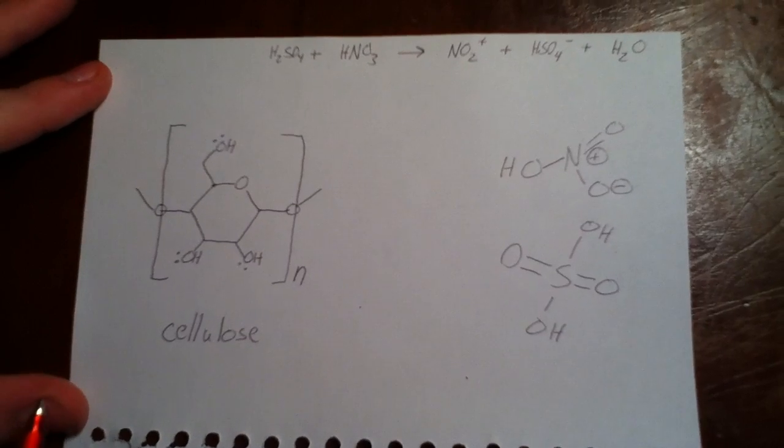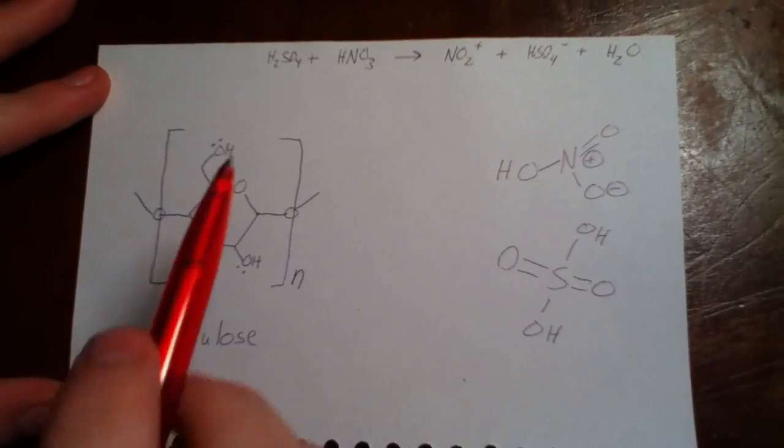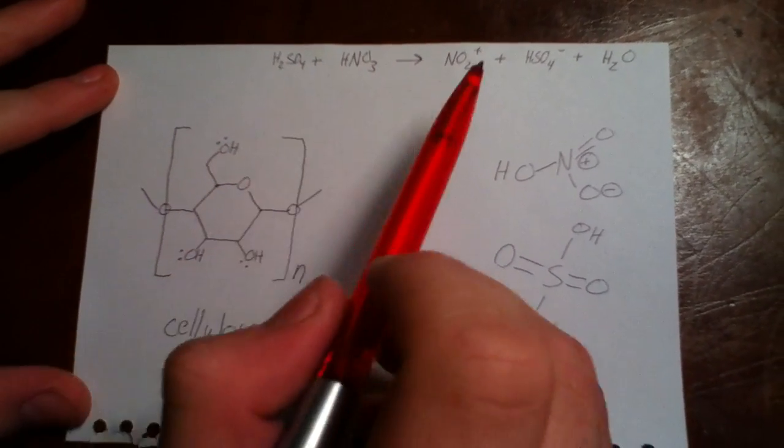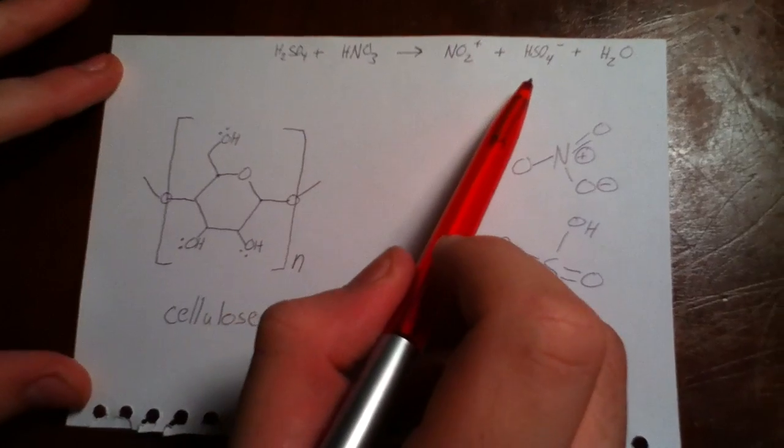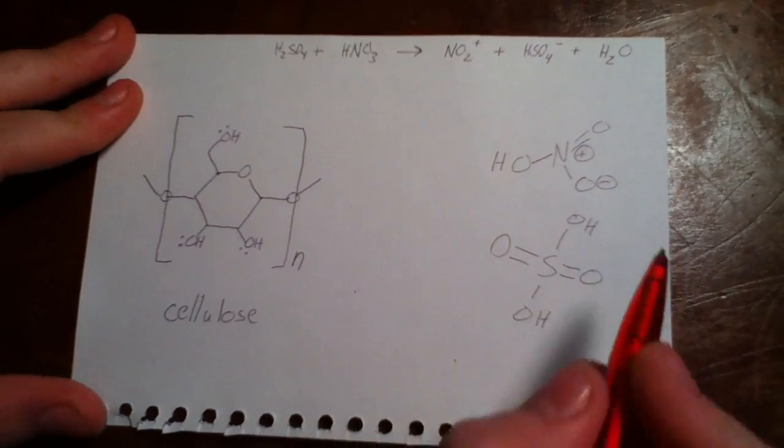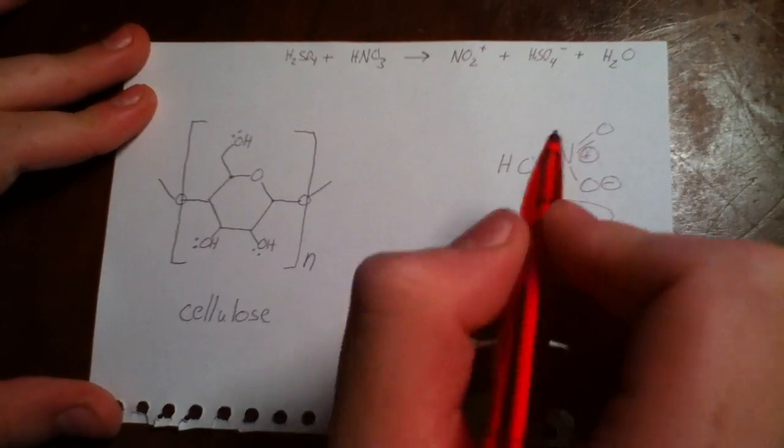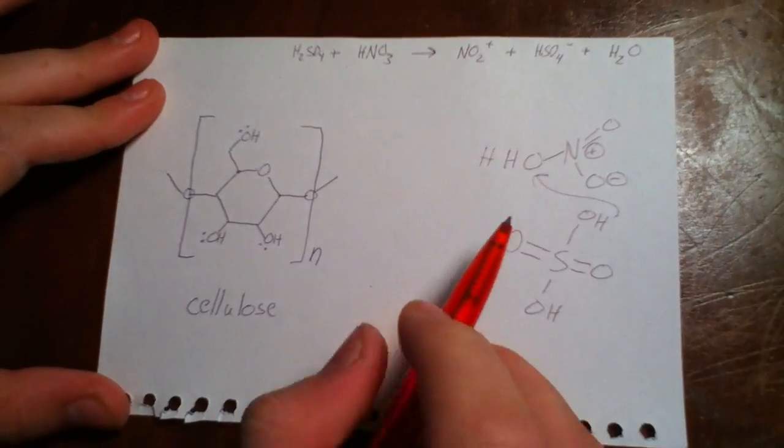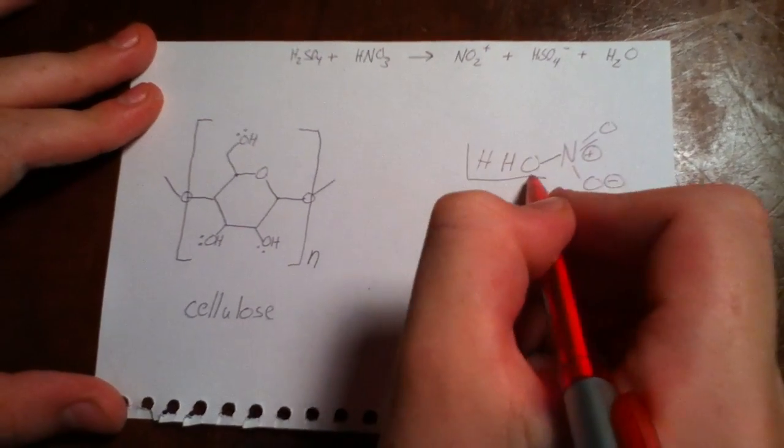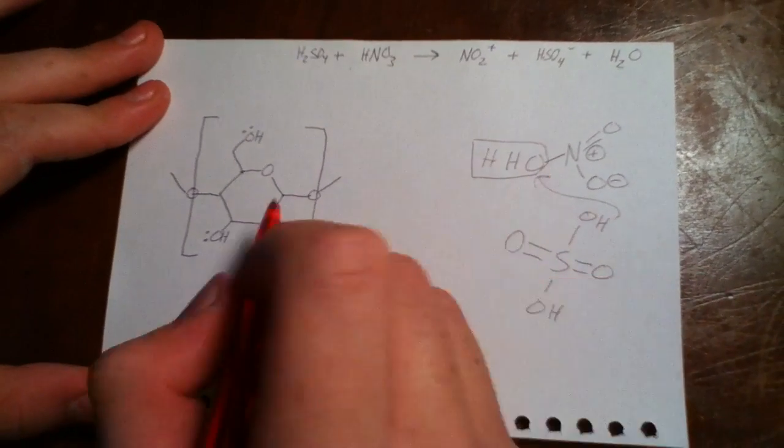Sulfuric acid is such a strong acid that it will actually protonate the weaker acid, nitric acid, giving the nitronium ion, the bisulfate ion, and water. As you can see, the proton comes off of sulfuric acid, forming H2O, which is water, which is an excellent leaving group. This separates off, leaving a very reactive nitronium ion, which is electron deficient.